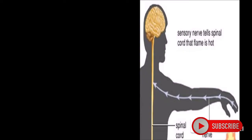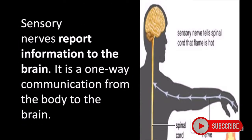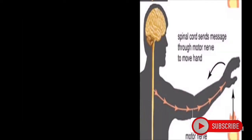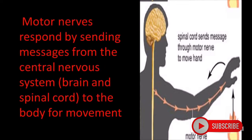Sensory nerves report information to the brain. It is a one-way communication from the body to the brain, providing sensation of the environment to the brain through the spinal cord. Motor nerves respond by sending messages from the central nervous system — brain and spinal cord — to the body for movement, helping to show responses or reactions due to stimulation.